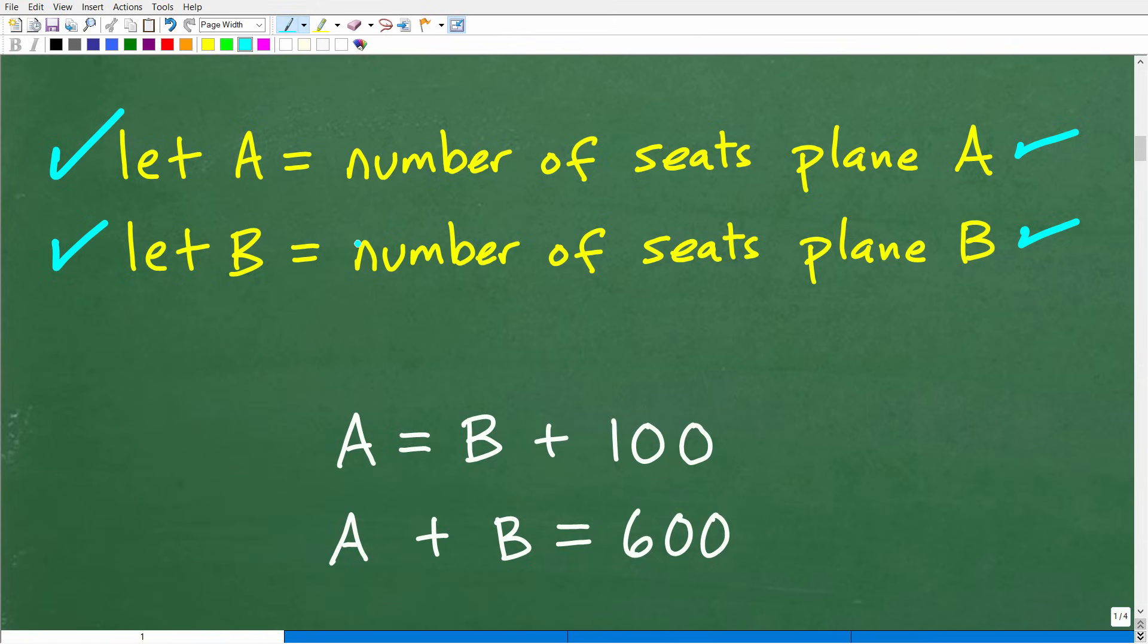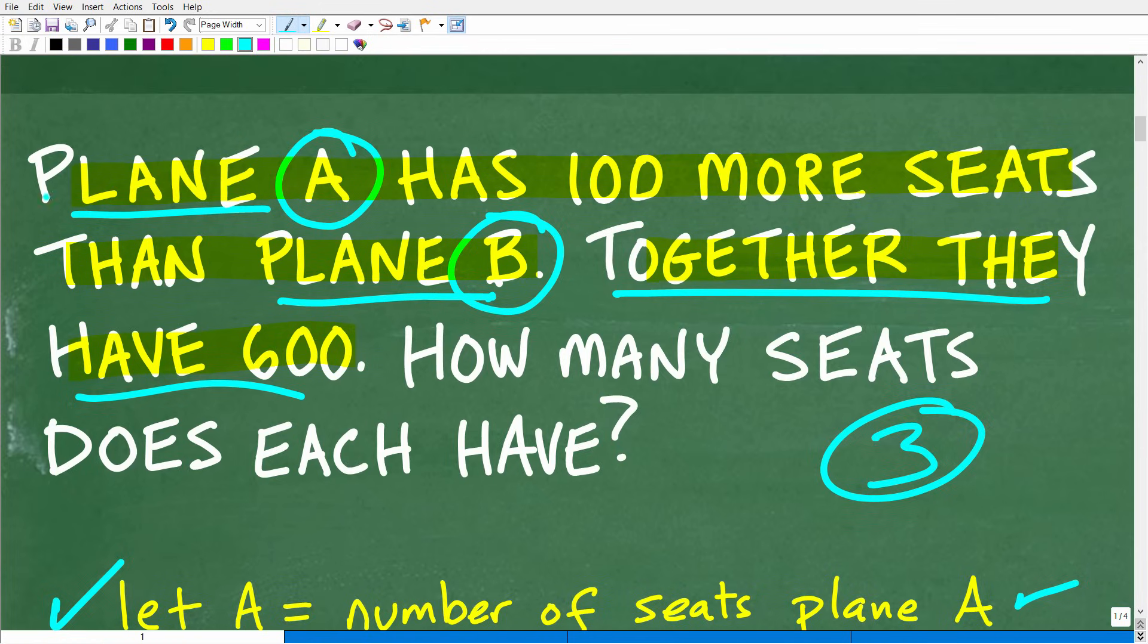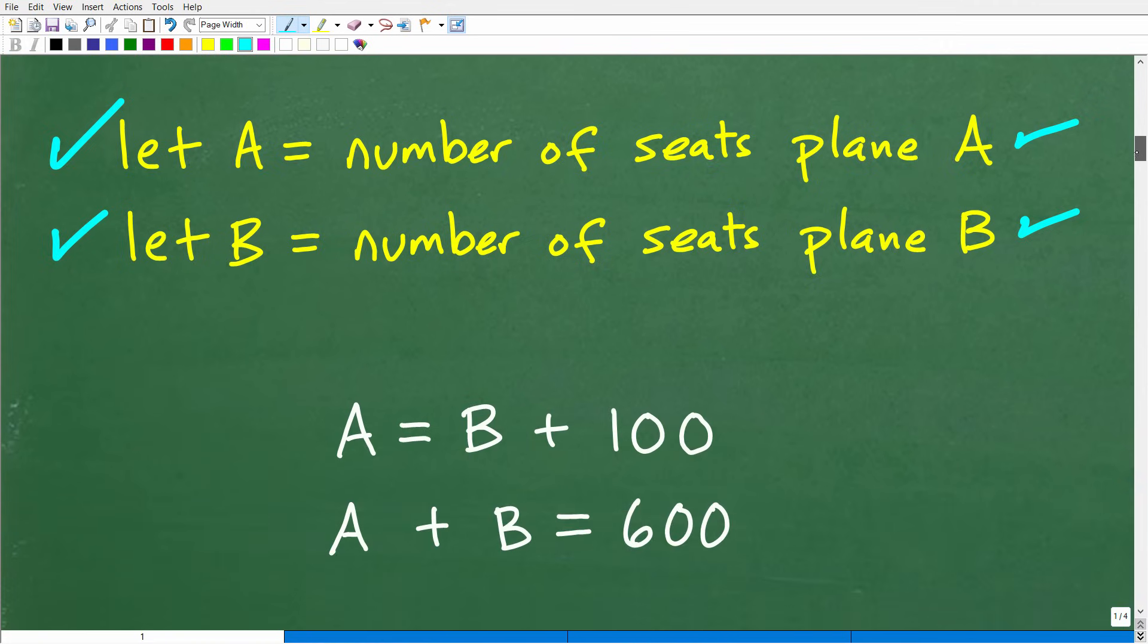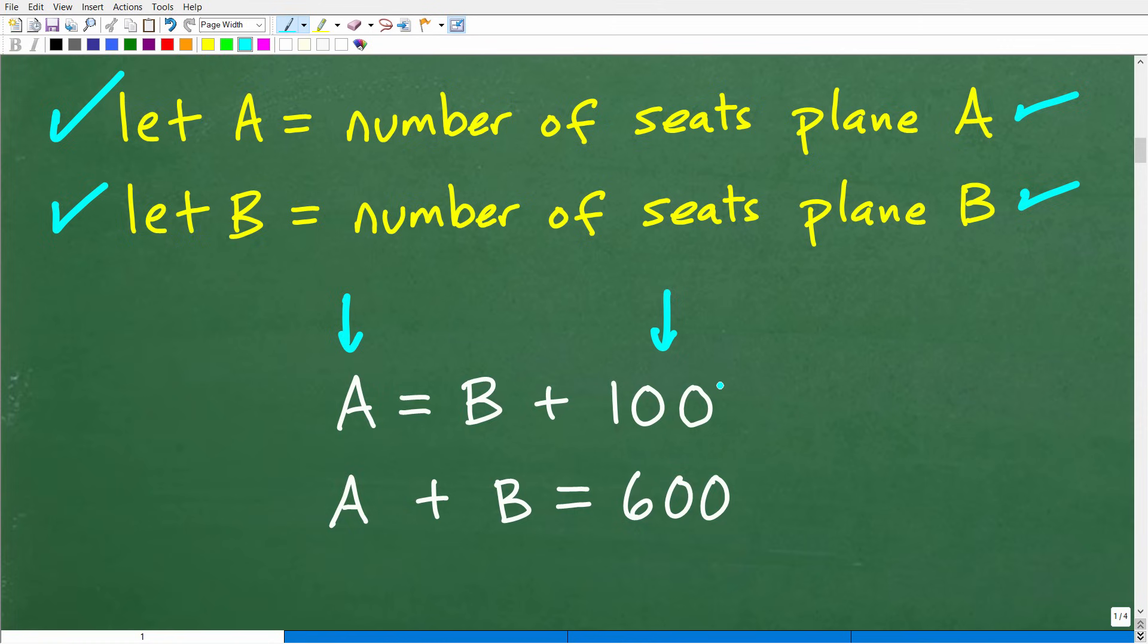Okay, so Plane A, let's go back here and interpret this. So Plane A, this is the first part of this problem, has 100 more seats than Plane B. Now we have to be very careful here. Plane A has 100 more seats than Plane B. So how can we write that here? Well, Plane A has 100 more seats than Plane B. So you have to be really careful because oftentimes people will put B is equal to A plus 100. Whatever you do when you write an equation, you have to kind of look at it and make sure that you wrote the equation correctly that reflects the information in the problem. So Plane A has 100 more seats than Plane B.